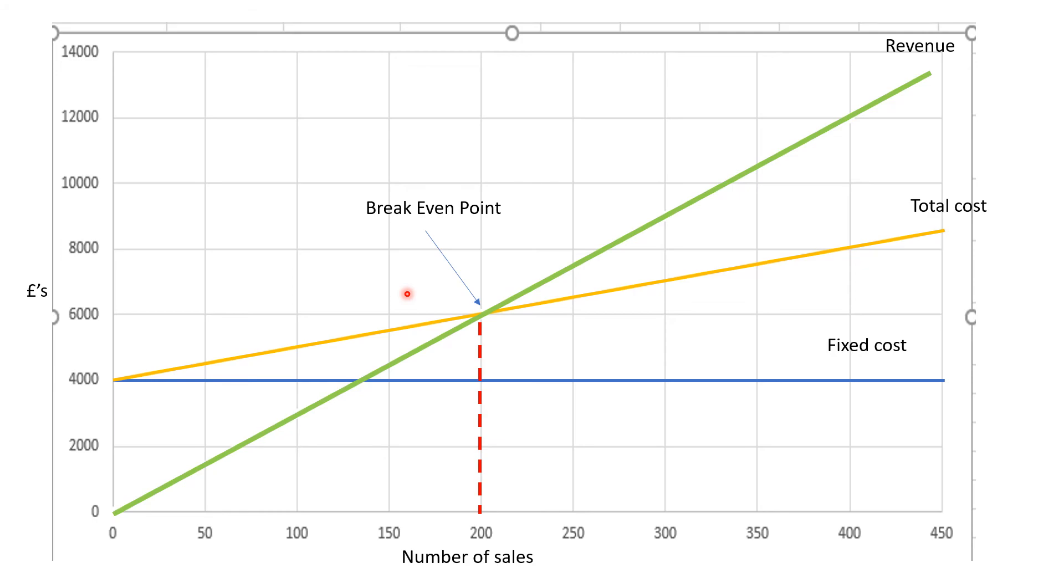They can also ask us to identify the area of loss and profit. So if we look back logically, if the total cost is above the total revenue, we are spending more than we are receiving. And this area here is the area of loss. So it is the difference between the yellow line here and the green line here.